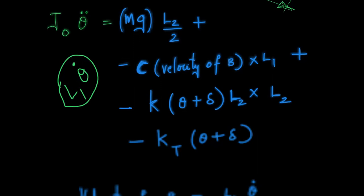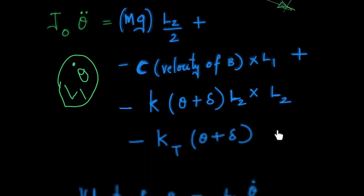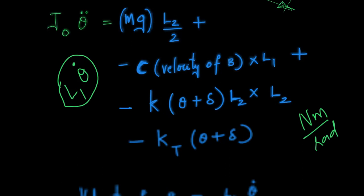Similarly, the spring is at distance L2, so the total spring force is k times (theta + Delta), where Delta is the static deflection and theta comes from vibratory motion. That force times L2 gives the spring moment about point O. The torsion spring contributes a moment of kt times (theta + Delta) directly — no need to multiply by a length since kt has units of N·m/radian.